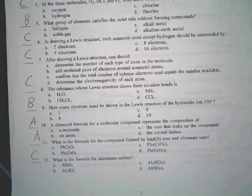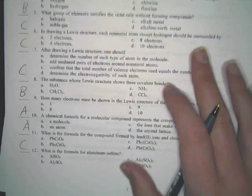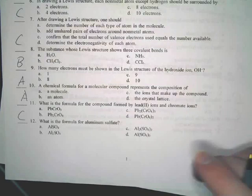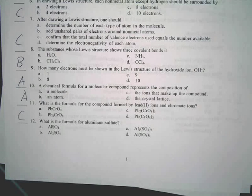Drawing a Lewis structure, each non-metal atom except hydrogen should be surrounded by eight electrons. I don't have a lot to say on that one. You should know that. After drawing a Lewis structure, number seven's kind of, that's debatable. Now, eight.